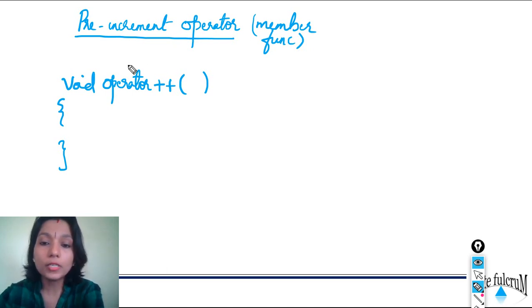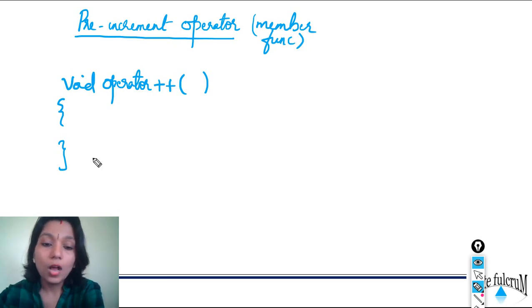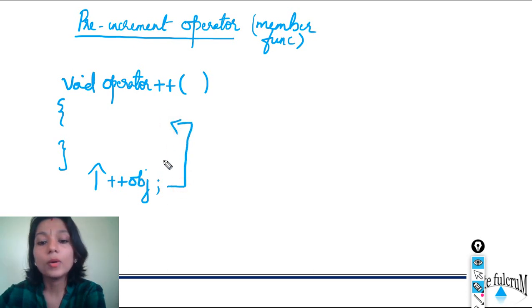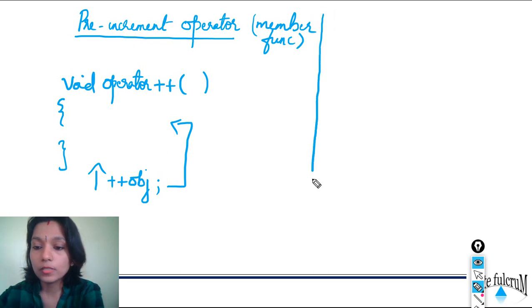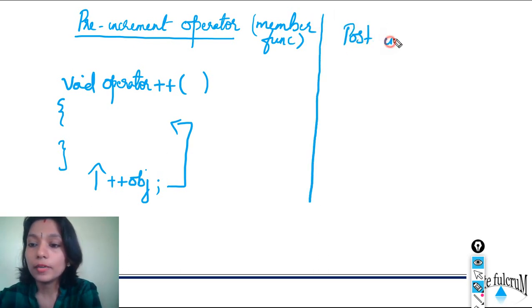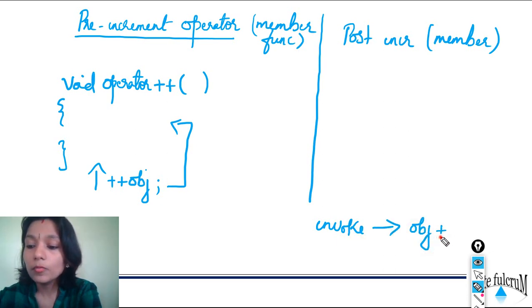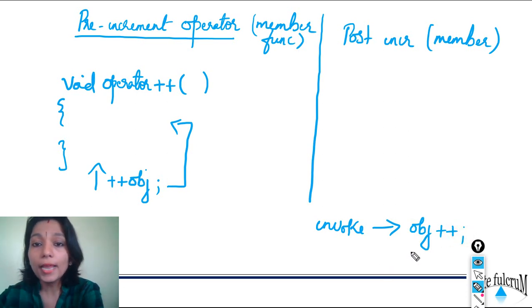Now, how do you overload the post-increment operator as a member function? For pre-increment, if 'obj' is your object, you invoke it with '++obj', and this calls the operator overloaded function. For post-increment, the invocation is 'obj++'. So we need to implement the operator overloaded function accordingly for this post-increment case.